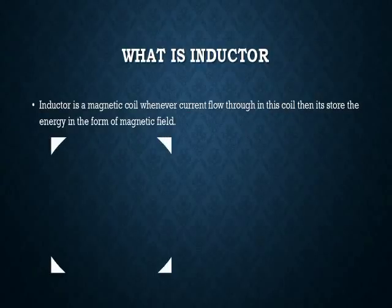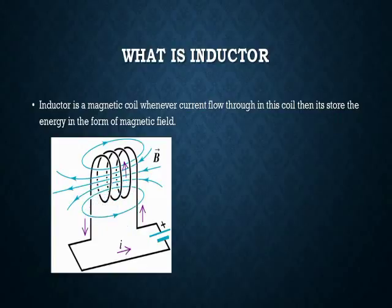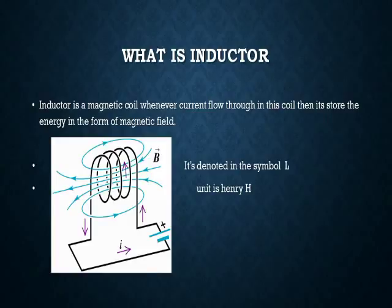What is an inductor? An inductor is a magnetic coil. Whenever current flows through the coil, it stores the energy in the form of a magnetic field. As you can see in the drawing, current flows in the coil and it produces the flux B, so it stores the energy in the form of magnetic flux. It is denoted by the symbol L and its unit is henry.